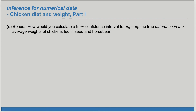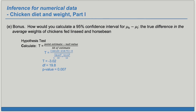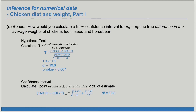Part E (bonus): How would you calculate a 95% confidence interval for mu sub H minus mu sub L, the true difference in average weights of chickens fed linseed and horse bean? In the hypothesis test we calculated the test statistic, degrees of freedom, and p-value. For the confidence interval, we want a point estimate plus or minus the critical value times the standard error of the estimate. The point estimate is the same — the difference in sample means — and the standard error is also the same. What we need now is the critical value T star. Be careful: the test statistic is not the same as the critical value. To find T star, we always need to look at a t-table.